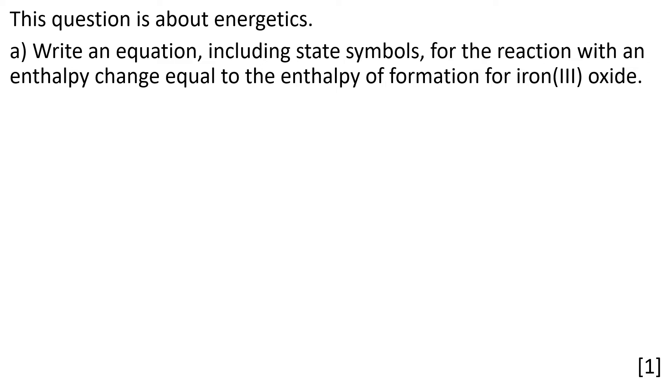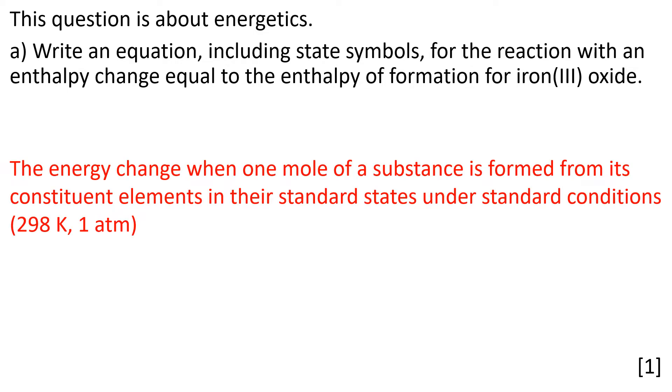In this case, the definition for enthalpy of formation is the enthalpy change when we form one mole of a substance from its constituent elements in their standard states. So iron(III) oxide is going to be made from iron and oxygen. Iron will occur as a solid, oxygen as O₂ gas, and iron(III) oxide. Iron makes 2- ions, iron is in the +3 oxidation state, so there's Fe₂O₃ solid.